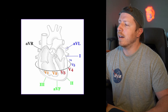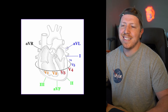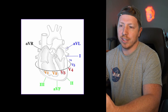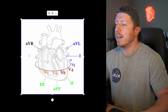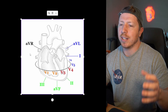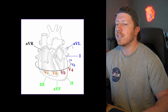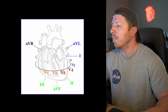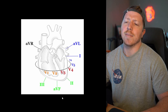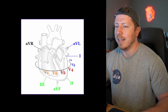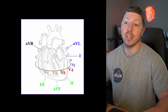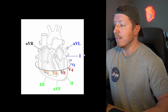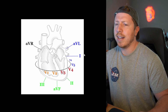aVL looks at the lateral aspects — L for lateral or left, whichever helps you remember. aVF — you can think of 'F' for foot — looks at the inferior portion of the heart. aVR looks at the right, with R for right. Finally, we have the V leads, which are honestly probably my favorites. You have to think of the heart in 3D space, with a ring around it like the rings around Saturn.